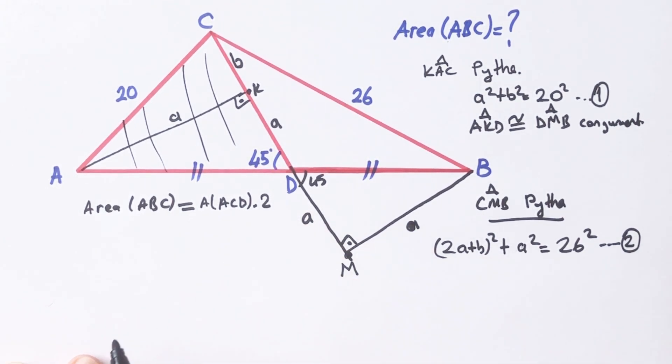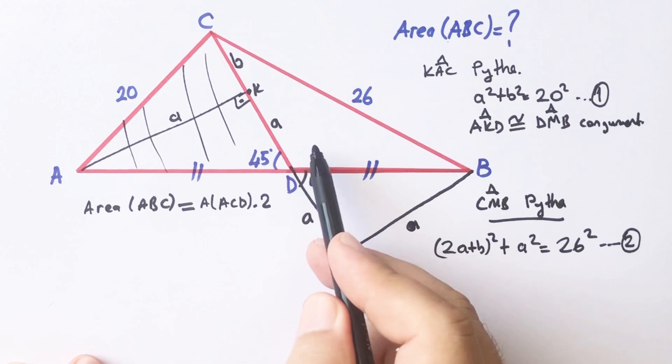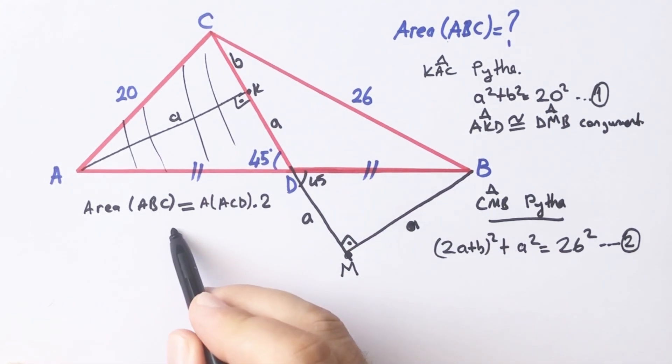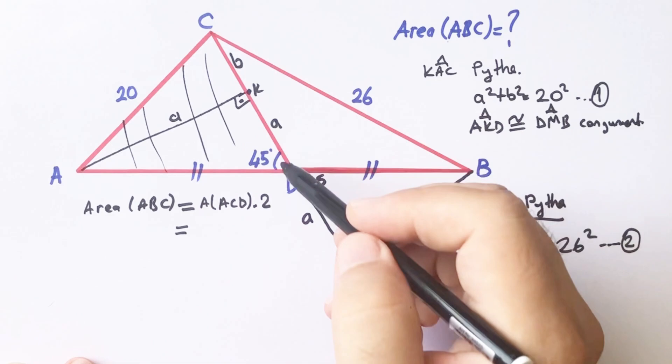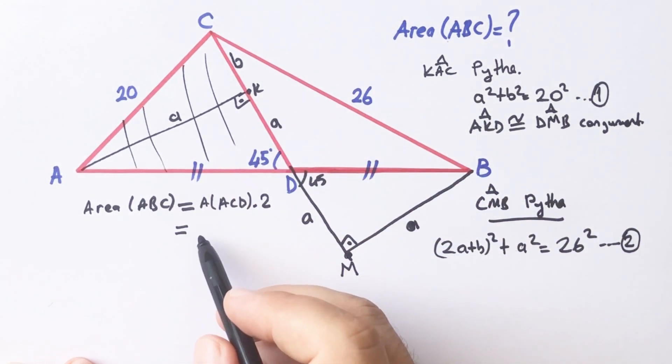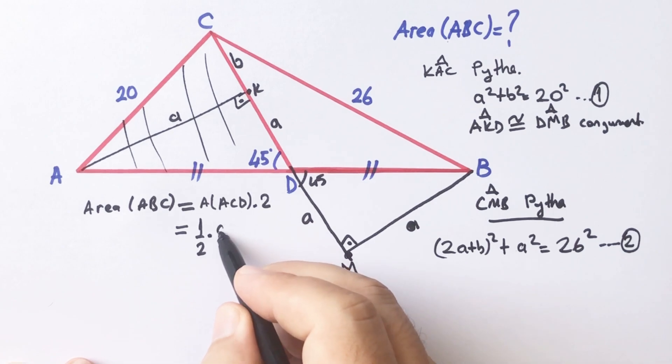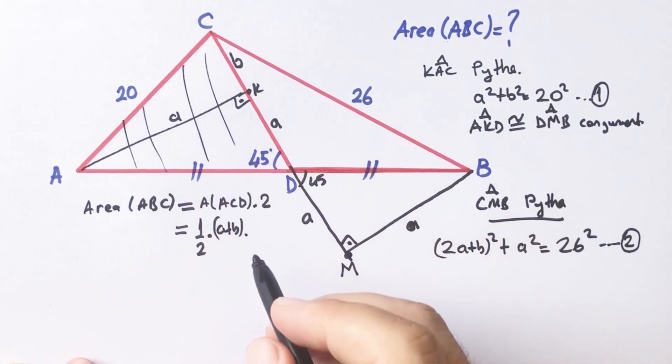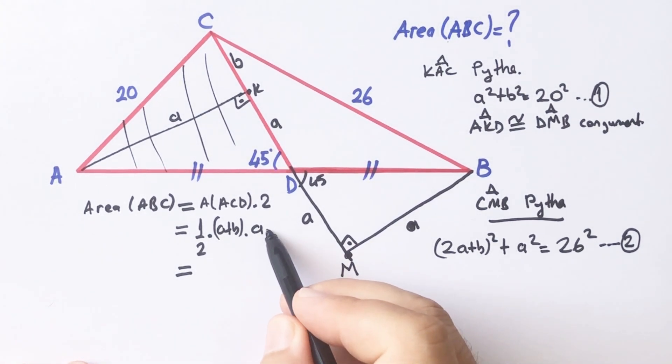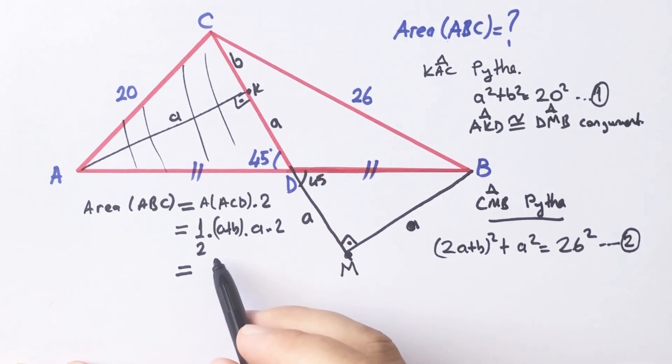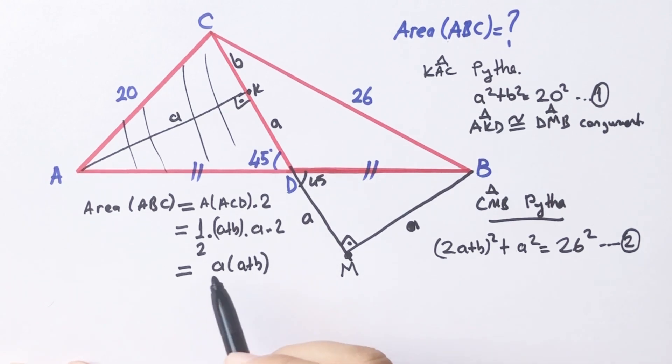Because ACD triangle and CDB triangle have same area. Therefore, half of the base, base is b plus a, and height is a, so the area of ABC triangle equals a times a plus b.